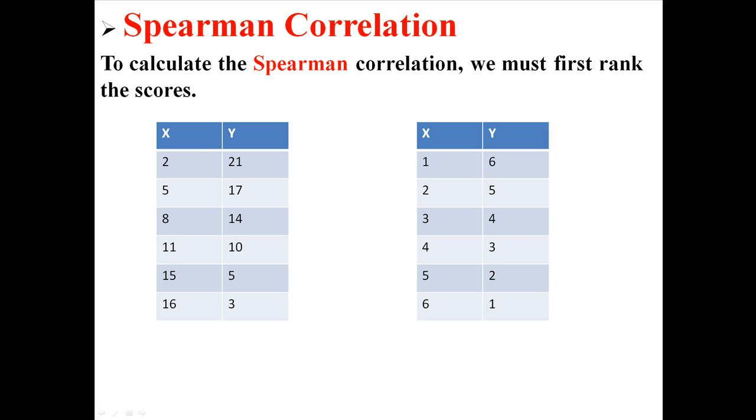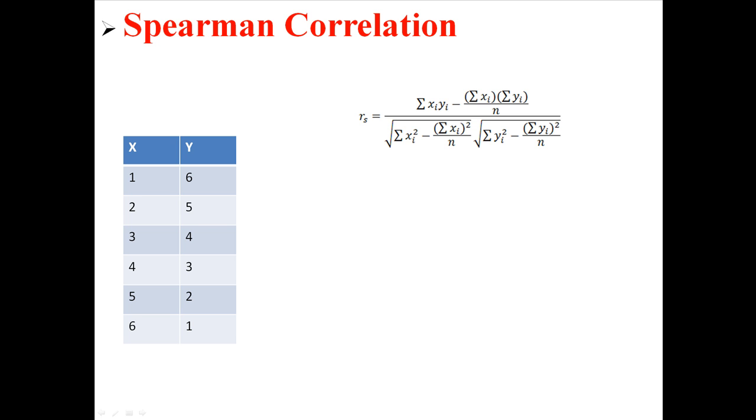So 2, 5, 8, 11, 15, 16 turns into 1, 2, 3, 4, 5, 6. And the same for y. So now we're just going to forget about the original data and we're just going to work with these ranks.